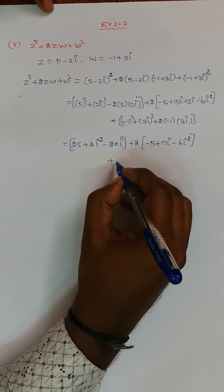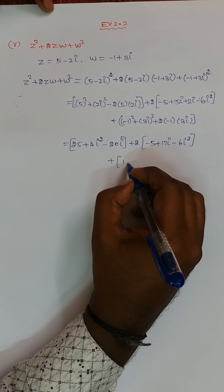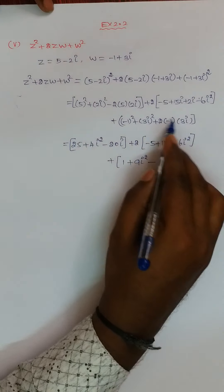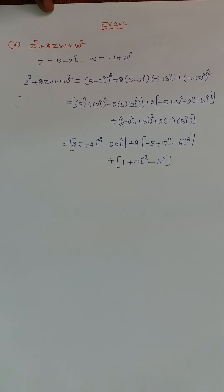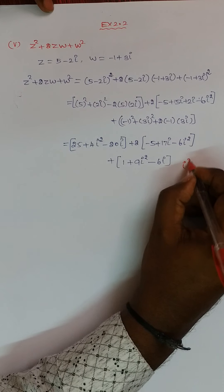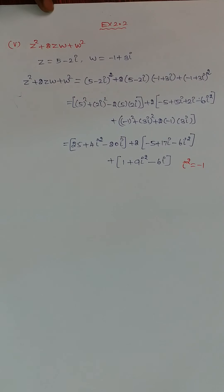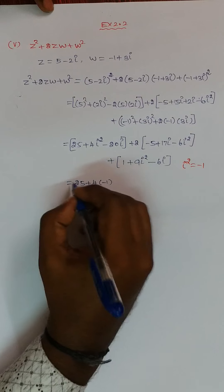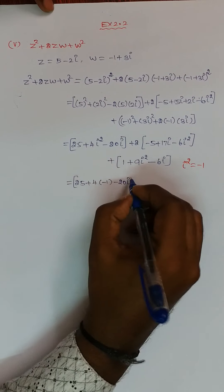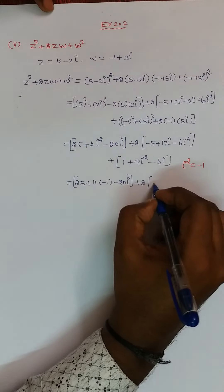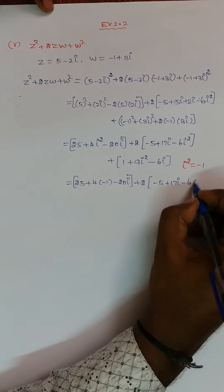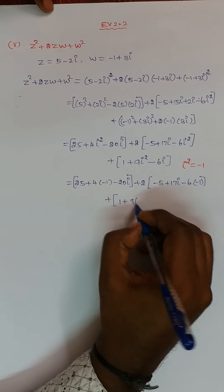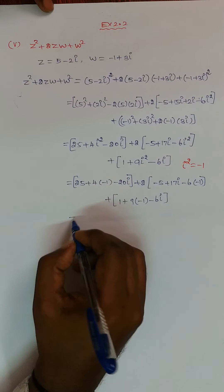The next term: minus 1 squared = 1, plus 3 squared = 9 into i², so minus 2 into 3i = minus 6i. We already know that i² is equal to minus 1. Now I am going to substitute this value. So: 25 plus 4 into (i² = minus 1) minus 20i, next 2 into minus 5 plus 17i, and minus 6 into (i² = minus 1), plus 1 plus 9 into (i² = minus 1) minus 6i.